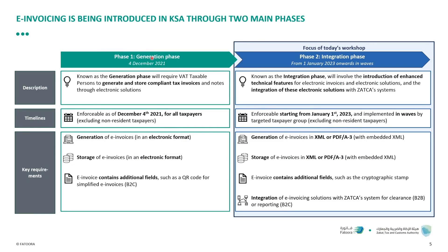Phase one is called the generation phase, which started enforcement on December 4th of 2021. Here we asked taxpayers or VAT taxable persons to start generating and storing compliant tax invoices in electronic formats — basically moving away from the manual paper-based way of generating invoices. Generation includes storing and adding specific fields to the invoice, most notably the QR code for simplified invoices or invoices targeted for B2C, business to consumer.